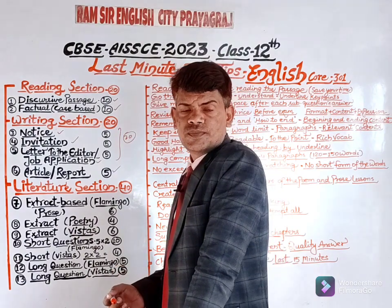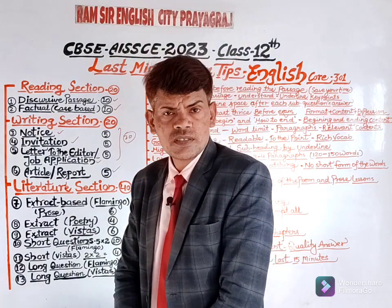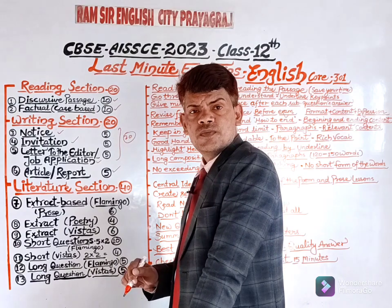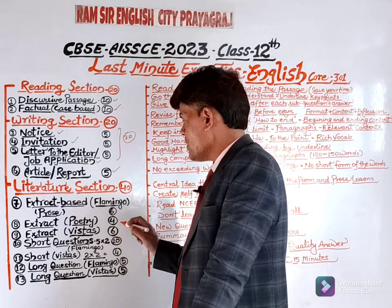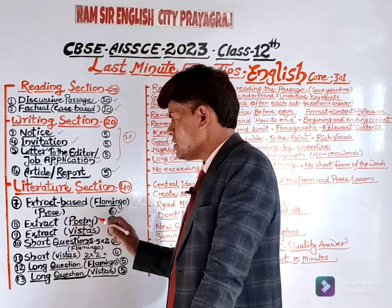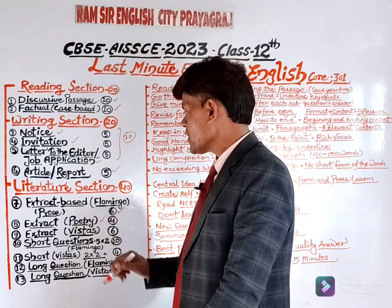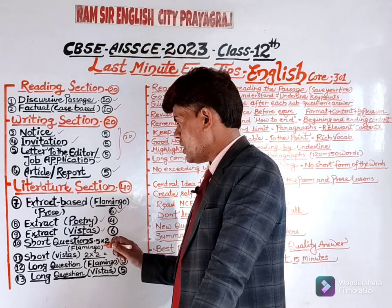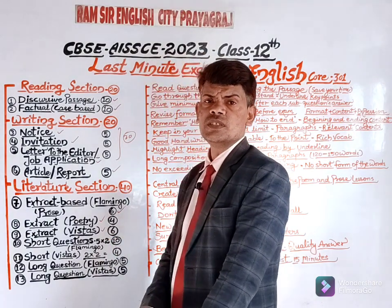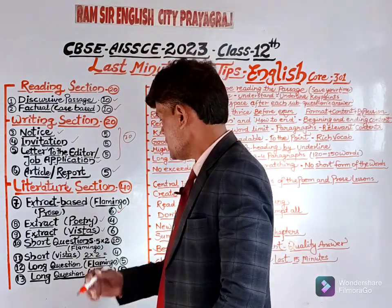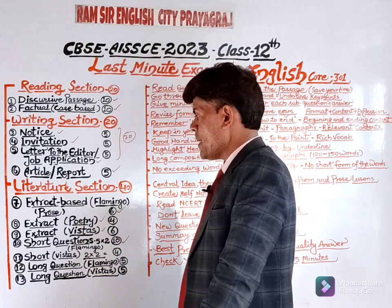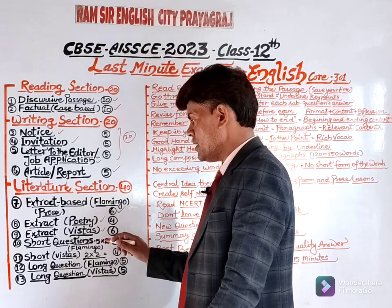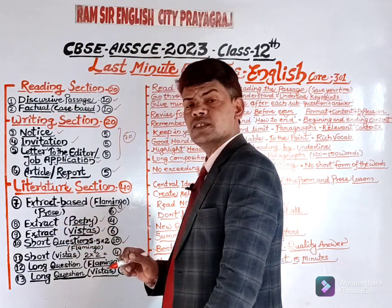The next section is literature. Dear students, there will be 7 questions given in your question paper. The first one is an extract based from your textbook Flamingo for 6 marks. The second one is an extract based from poetry for 4 marks. The third one is an extract based from your second book Vistas for 6 marks.